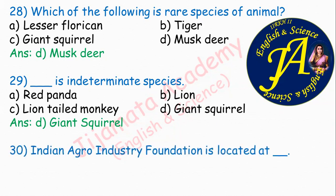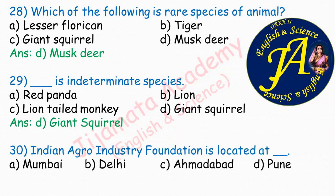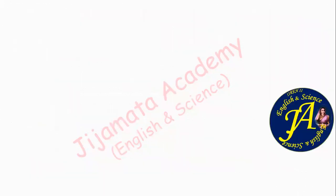Indian Agro Industry Foundation is located at dash. Options are Mumbai, Delhi, Ahmedabad, Pune. The correct answer is option D: Pune. Indian Agro Industry Foundation is located at Pune.